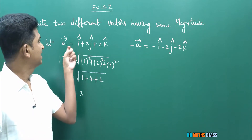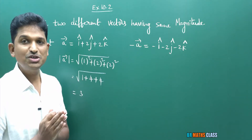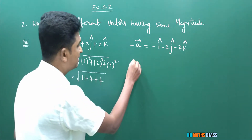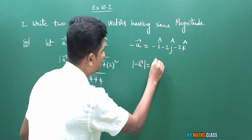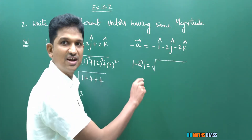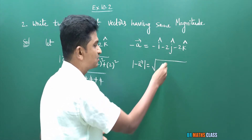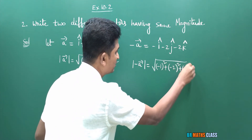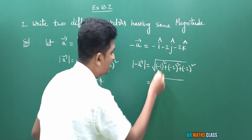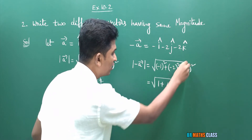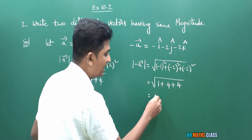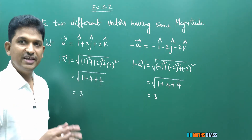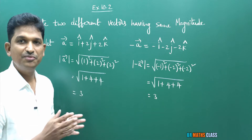Now the question is: are these two vectors having the same magnitude? The scalar components of −a bar are −1, −2, −2. The magnitude is root of (−1)² + (−2)² + (−2)² = root of 1 + 4 + 4 = root 9 = 3. You can observe that they have the same magnitude. Therefore, a bar and −a bar are different vectors with the same magnitude.